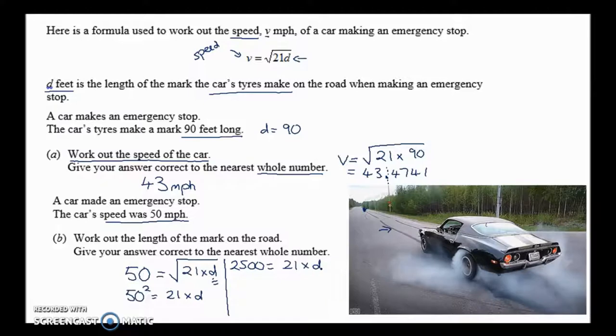50 squared is 2,500, and that equals 21 times something. So all we need to do now is figure out what is, instead of timesing on this side, we'll move the 21 over, it can divide on this side. So what's 2,500 divided by 21, and that will give me the value of D. So if you type that into your calculator, then you will get the answer, and you'd round that up to the nearest whole number. Let me just do that on my calculator.